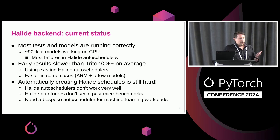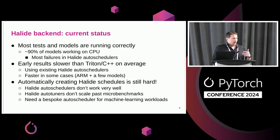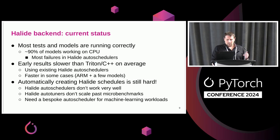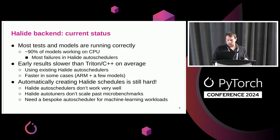One big lesson is that, even 10 years ago when I was working on Halide autotuners, coming up with schedules in the Halide model is a really hard problem — and it remains a really hard problem today. The existing Halide autoschedulers don't work very well, and the autotuners don't scale up past microbenchmarks. To get better performance, we're really going to need a bespoke autoscheduler for Halide that targets machine learning workflows. But performance isn't the main goal — the main goal is to make the compiler more extensible.